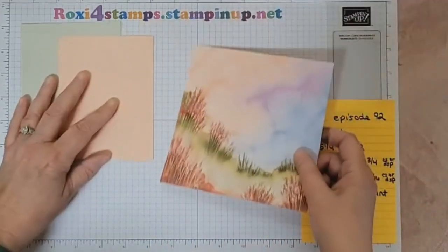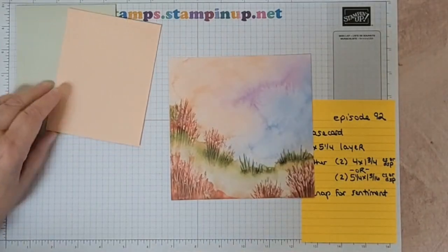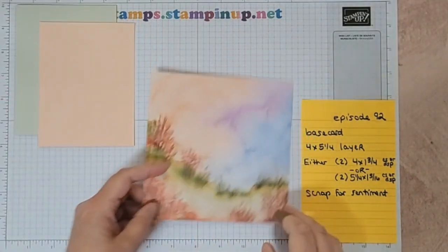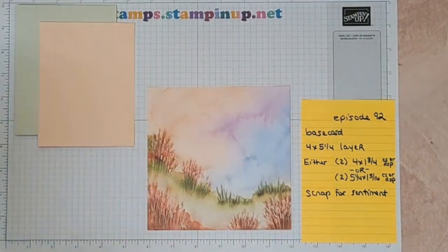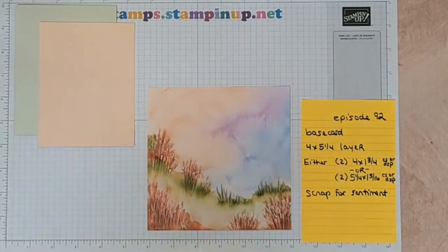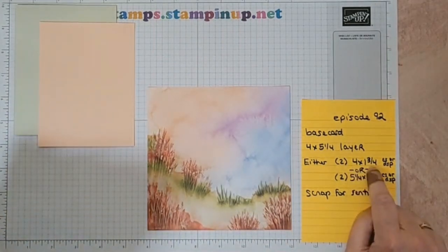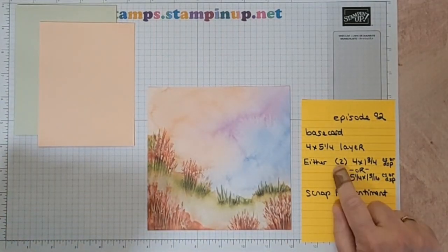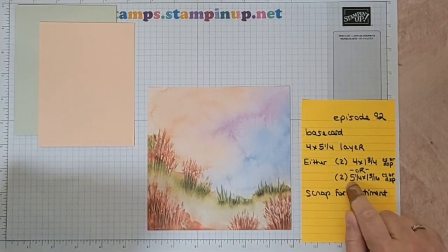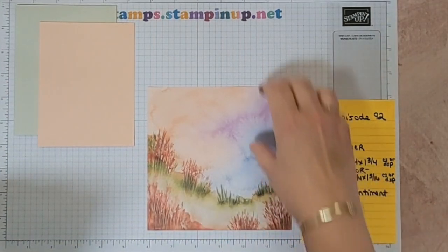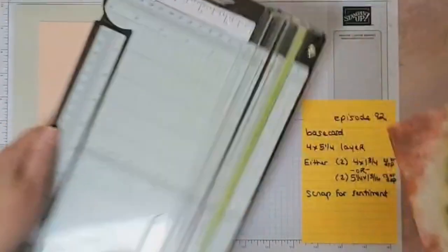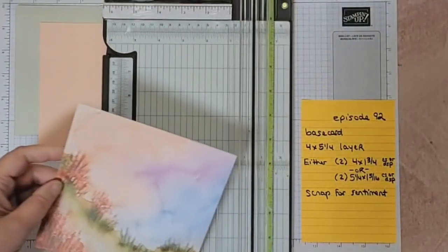Then we are going to cut this at either four by one and three-fourths, two of them, or five and a fourth by one and five-sixteenths. So let's go ahead, I think because I want to do this but I don't want to cut into that.